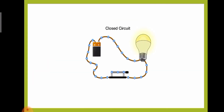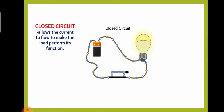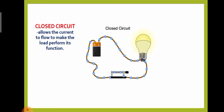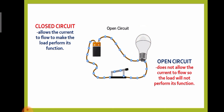This is the illustration for open and closed circuit. A closed circuit allows the current to flow to make the load perform its function. While an open circuit does not allow the current to flow, so the load will not perform its function.